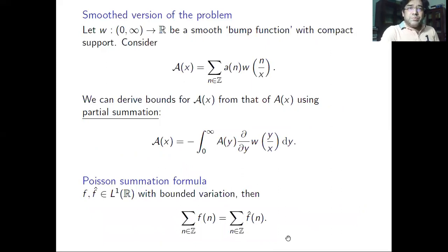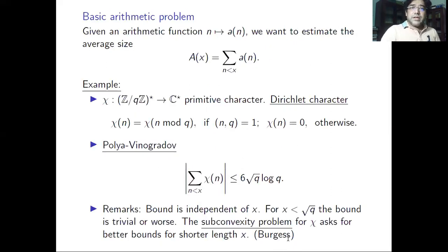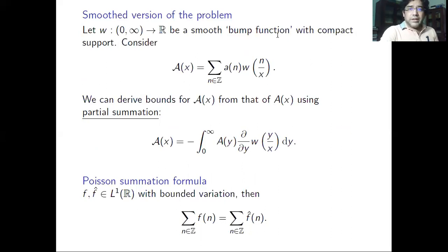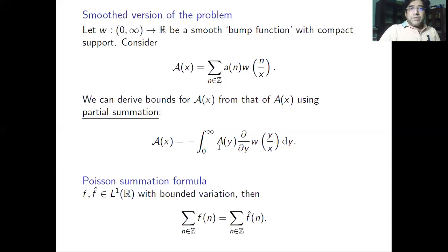We can also look at a smooth version of the problem. Previously we had a sharp cutoff in the arithmetic sequence; now we have a smooth weight function ω, which is a bump function supported between 1 and 2 with all derivatives bounded by 1. The sum Σ a(n) ω(n/x) is essentially a smooth version of A(x), and by partial summation we can relate the smooth version to the sharp cutoff and vice versa.